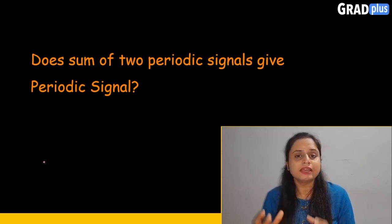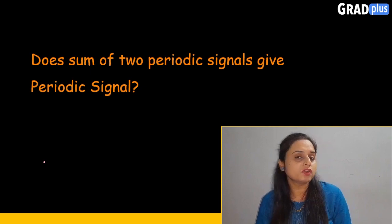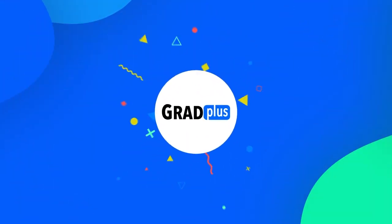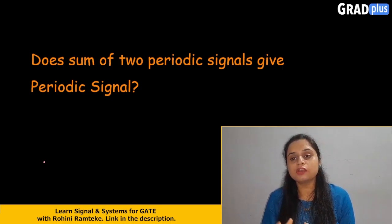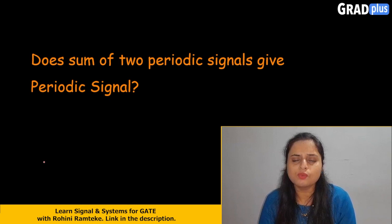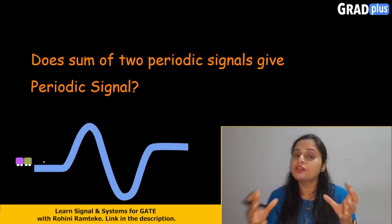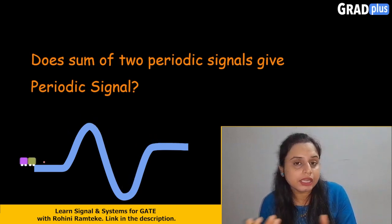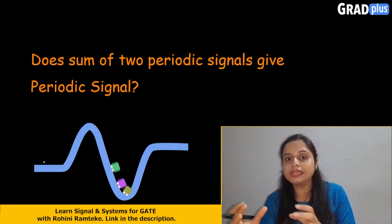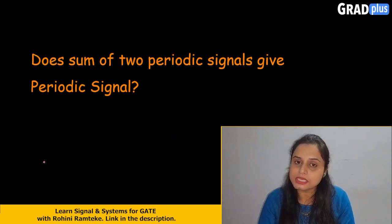Hello everyone! Let us find out whether the sum of two periodic signals will be a periodic signal or not. First of all, let us find out what a periodic signal is. Any signal which has some pattern and it will be repeated continuously after a particular interval of time — those signals come under the periodic signals.